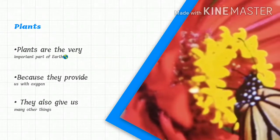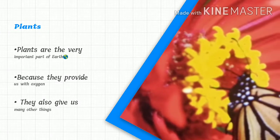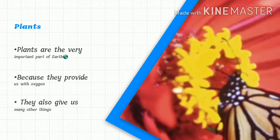Plants are a very important part of earth because they provide us with oxygen. They also give us many other things.